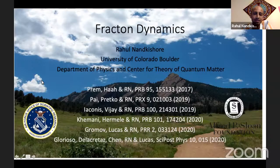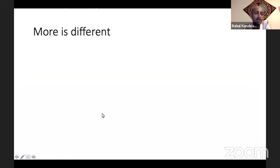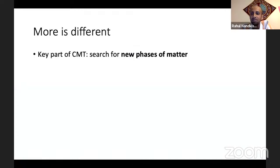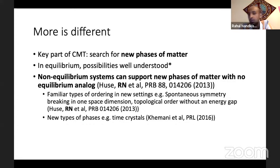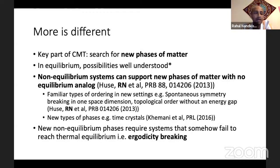I have listed here the various papers which comprise the work I'll be talking about. In terms of motivation, I'm a condensed matter theorist. And to my mind, the key thing about condensed matter theory is it's worth searching for new phases of matter. Now in equilibrium, the possibilities for what sorts of phases of matter we can have are fairly well understood. But non-equilibrium systems can support qualitatively new kinds of phases of matter with no equilibrium analog.